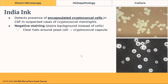Another method of direct microscopy is using India ink, specifically for encapsulated organisms like Cryptococcus. A CSF sample is stained with India ink. India ink is a negative stain — instead of staining the organism of interest, it stains the background. This forms a clear halo around the yeast cell, and that clear halo is the cryptococcal capsule. So for cryptococcal meningitis, India ink is used.